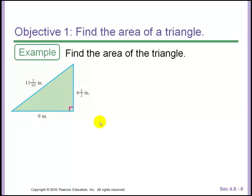Another example. Find the area of the triangle with side lengths 9 inches, 6 1⁄2 inches, and 11 1⁄10 inches. Notice right here this little box, that indicates the right angle. So that tells us our height is 6 1⁄2 inches and our base is 9 inches. This right angle is the key thing to look for.